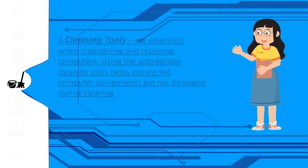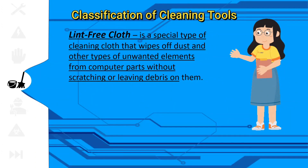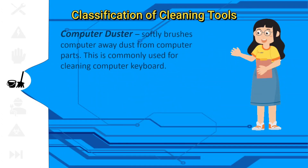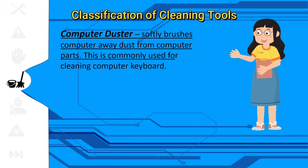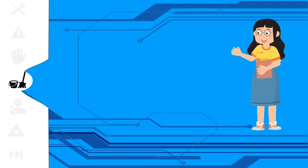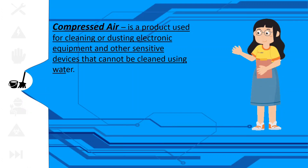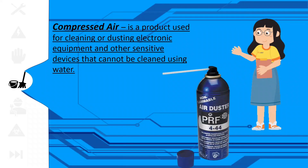Lint-free cloth is a special type of cleaning cloth that wipes off dust and other types of unwanted elements from computer parts without scratching or leaving debris on them. Computer duster softly brushes away dust from computer parts and is commonly used for cleaning computer keyboards. Compressed air is a product used for cleaning and dusting electronic equipment and other sensitive devices that cannot be cleaned using water.